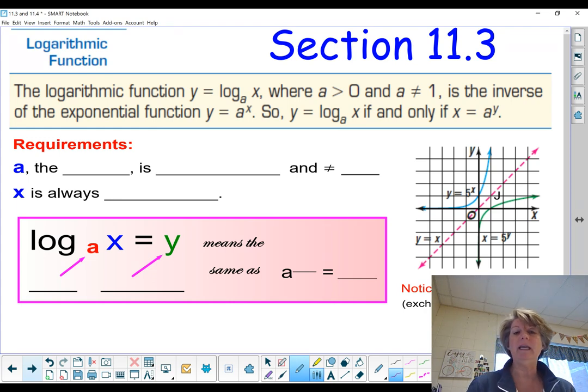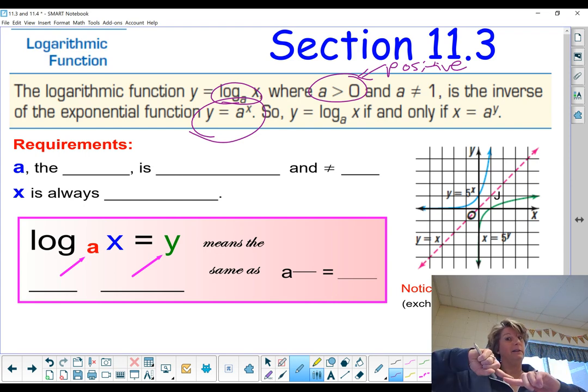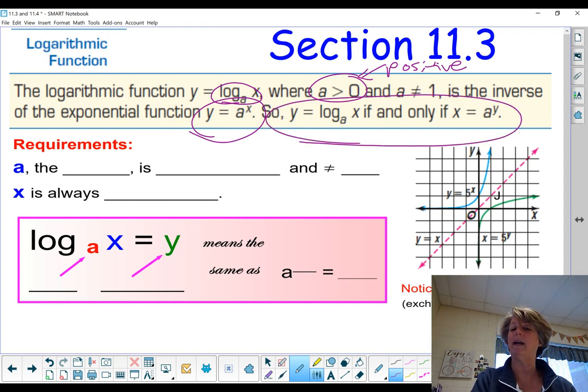The logarithmic function y equals log base a of x, where a is greater than 0, and a cannot be 1. This is the inverse of the exponential function y equals a to the x. So we just learned that these two functions are inverse functions of each other. They undo each other, kind of like multiplication and division. So y equals log base a of x if and only if x equals a to the y. This is just reiterating that relationship between them, that they are inverse functions.